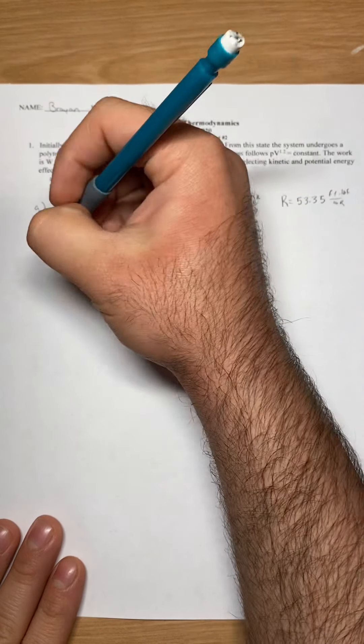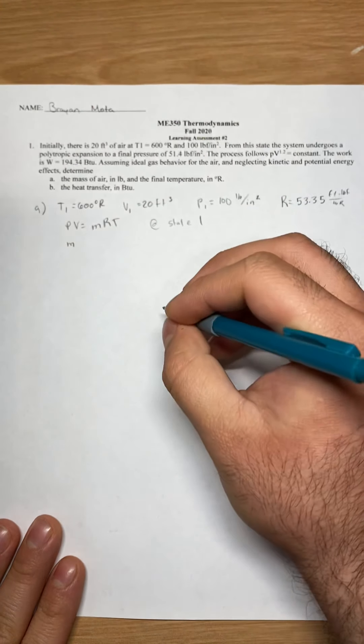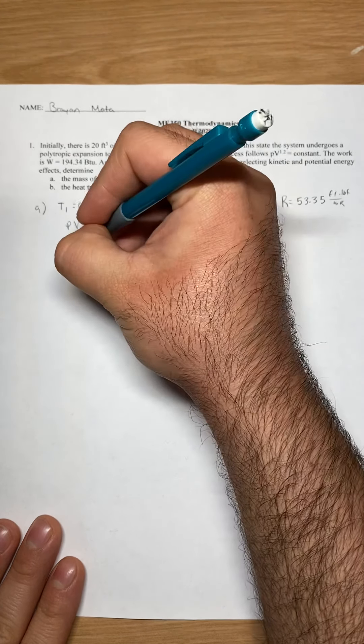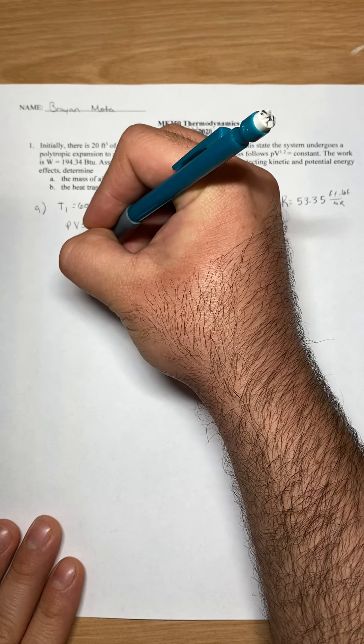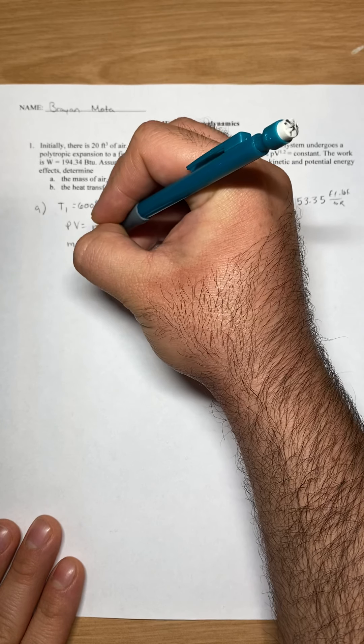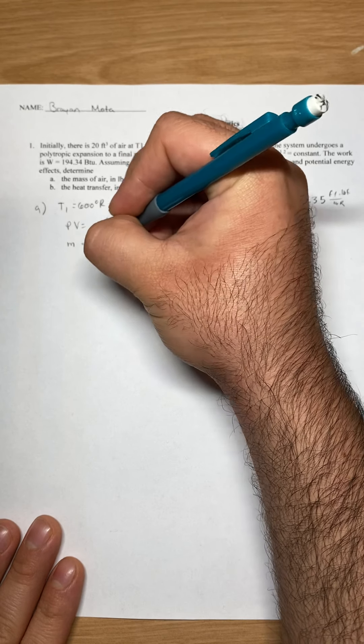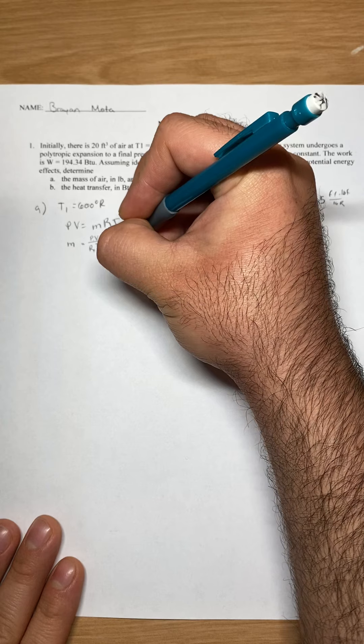We are given all these, so we can just manipulate and solve for our mass. So our mass equals PV over RT. P1, V1.